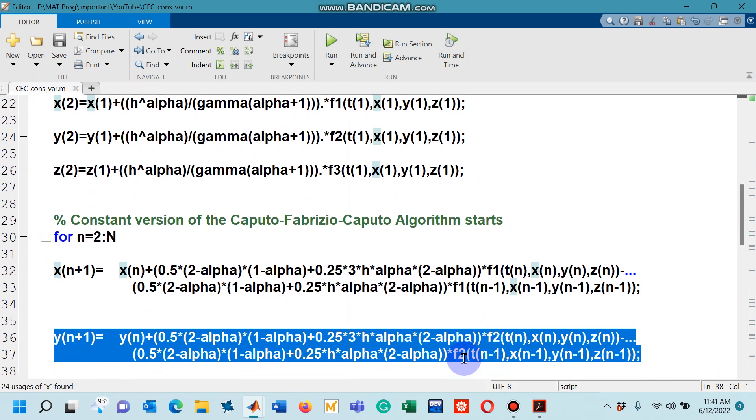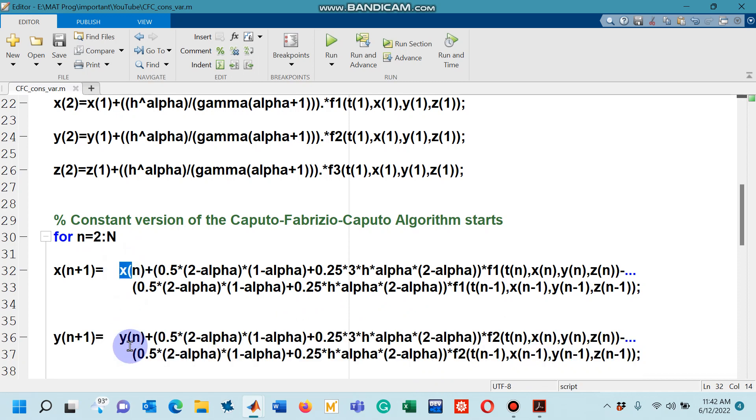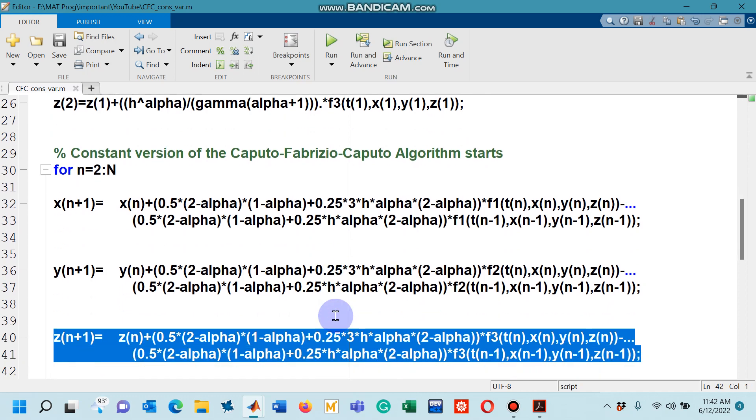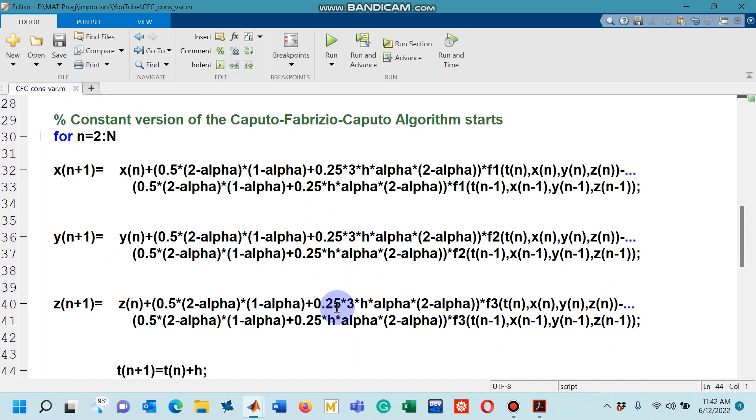Coming back to the code, you saw the code for the first state variable. Now, you will repeat it for the second state variable. Considering now, instead of f1, you will choose f2, and instead of x of n, you will use y of n. Rest of the things are same. And likewise, the third dependent variable. And that's it. The loop ends.